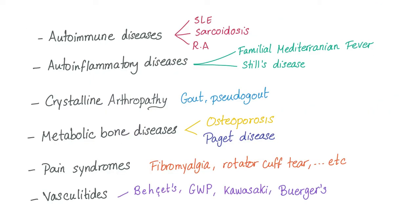Examples of rheumatological conditions: autoimmune diseases such as systemic lupus erythematosus, sarcoidosis, and rheumatoid arthritis; autoinflammatory diseases such as familial Mediterranean fever and Still's disease; crystalline arthropathy such as gout or pseudogout; metabolic bone diseases such as osteoporosis and Paget's disease; pain syndromes like fibromyalgia and rotator cuff tear; and vasculitides such as Behçet's, granulomatosis with polyangiitis, Kawasaki, and Buerger's disease.